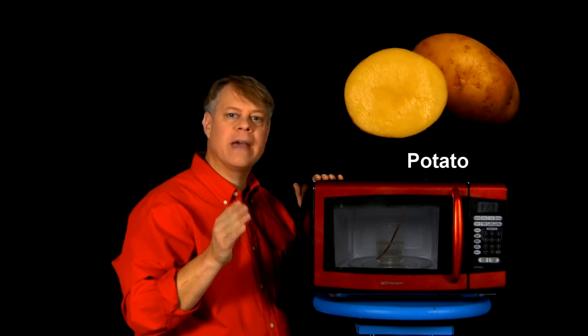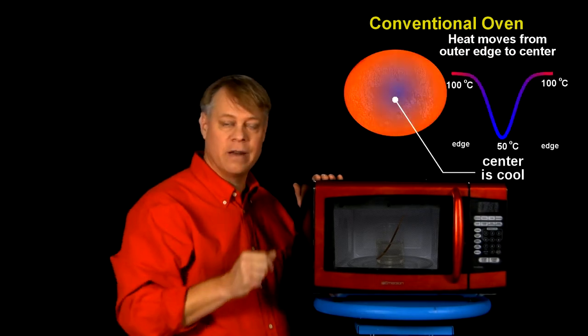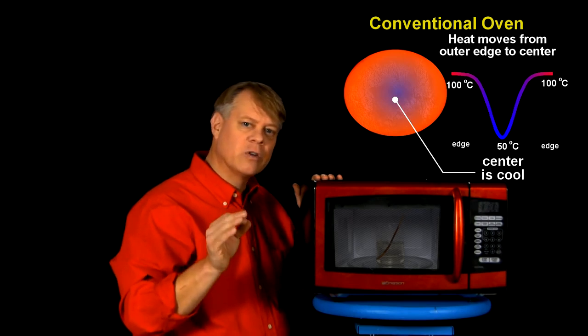In a traditional oven or stove, we heat food by placing a pan on a burner, or in the oven where the walls radiate heat, which cooks the outside of the food. The insides cook when heat transfers from the surface of the food to its interior.